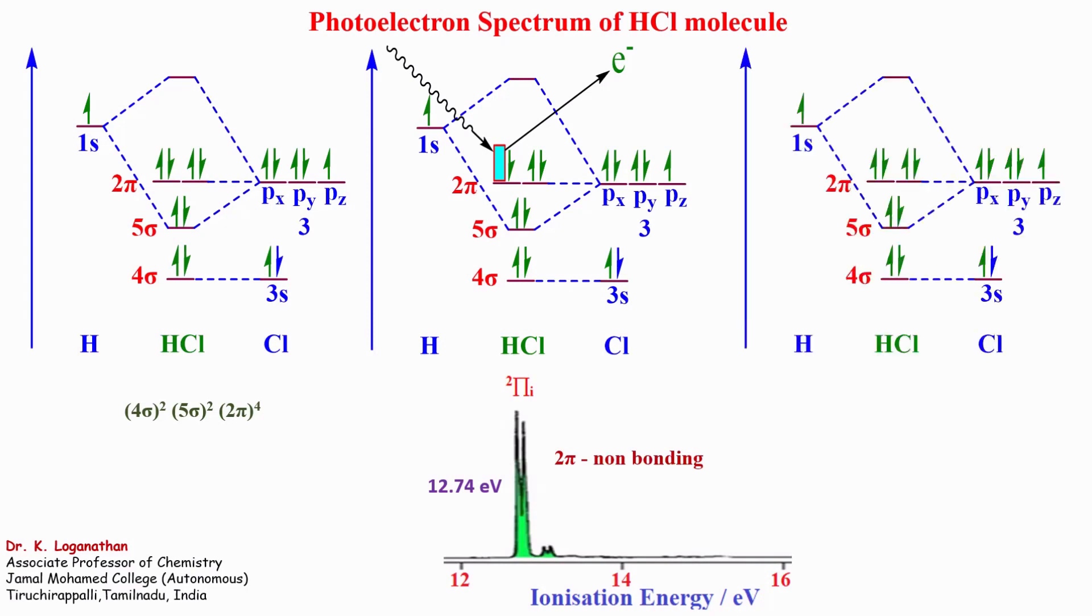Similarly, the removal of an electron from 5σ orbital leads to 2σ⁺ first excited state of hydrochloric acid plus ion and gives a band at 16.23 electron volts with long vibrational progression to higher energy, indicating that 5σ orbital is bonding molecular orbital.